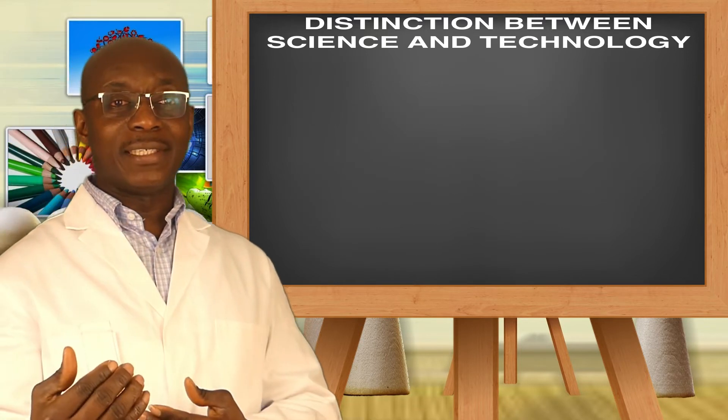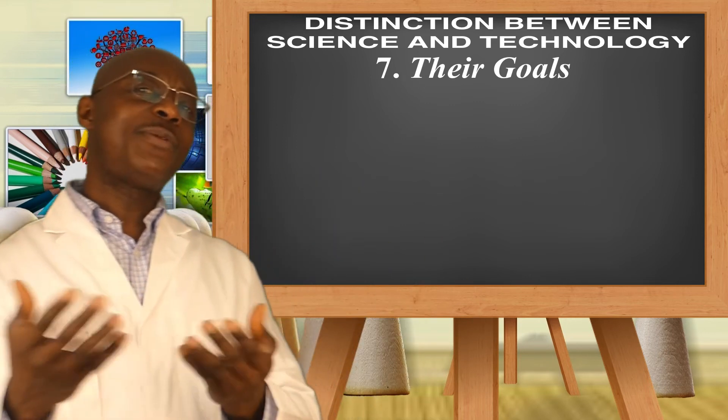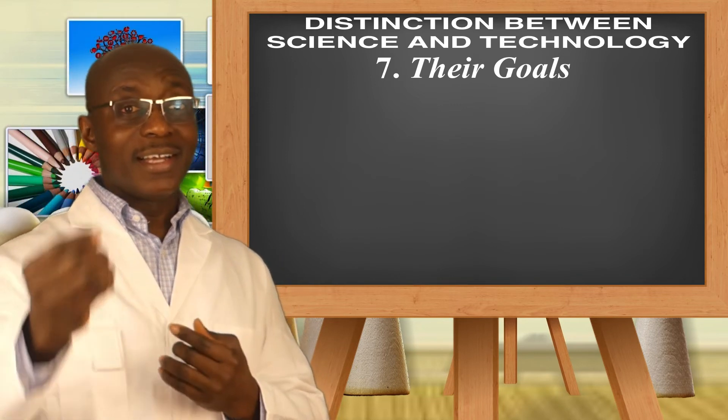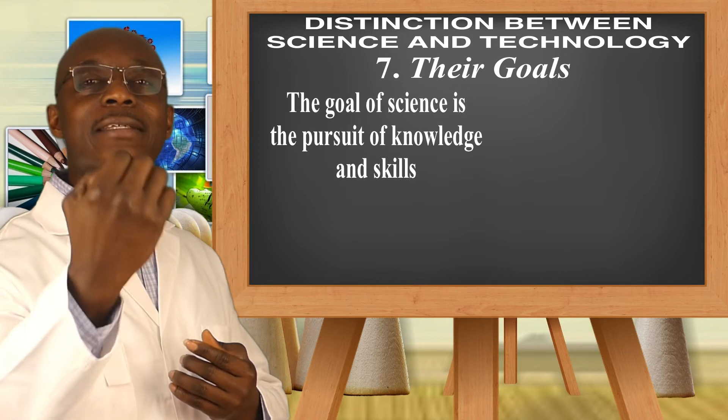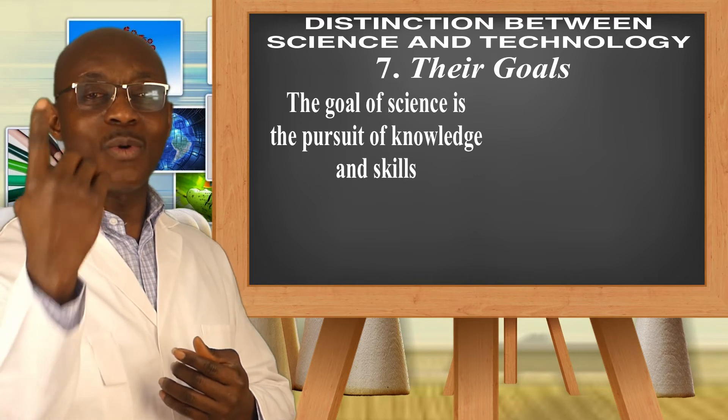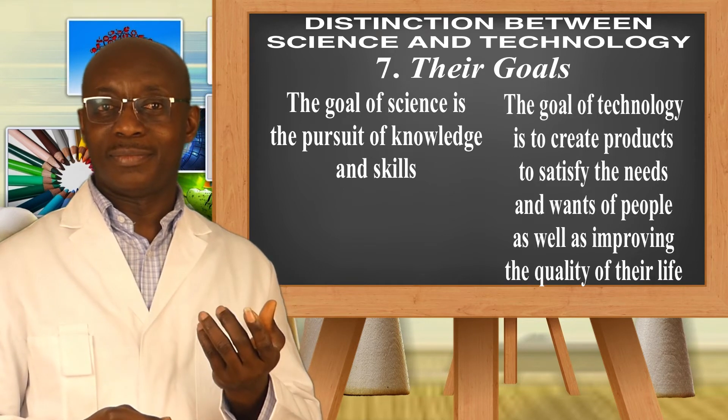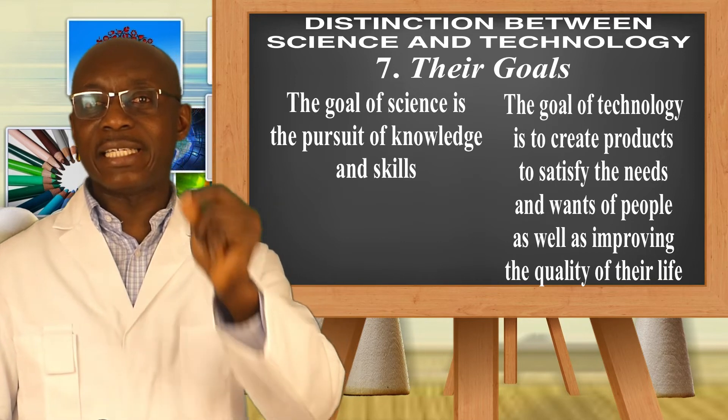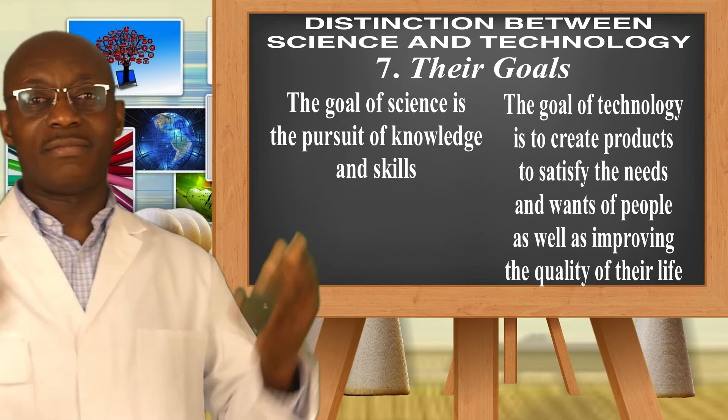And here comes the final point. And we're going to talk about the goal of science as well as the goal of technology. From what we have learned so far, what do you think is the goal of science? Well, the goal of science is the pursuit or the perseverance of knowledge and skills to create laws of nature. That is the goal of science. Technology, on the other hand, its goal is to create products to satisfy the needs and wants of people, as well as improving the quality of life. That is technology.